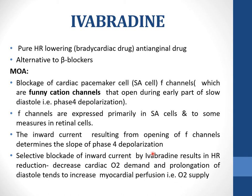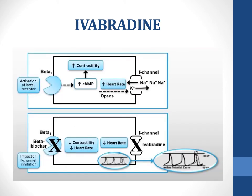Ivabradine inhibits the inward current from F-channels, which determines the slope of phase 4 depolarization. As shown in the schematic, increased cyclic AMP leads to increased contractility and heart rate. The inward current from F-channels increases heart rate, and ivabradine blocks this inward current through the funny cation channels, thereby reducing heart rate.